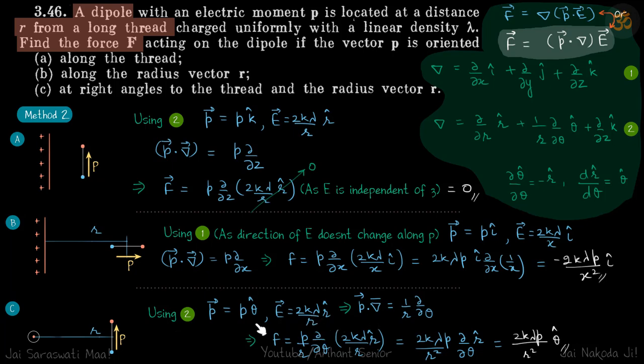So now we'll do p dot del. If you see only theta cap component will survive because again all these unit vectors are perpendicular to each other. So p theta cap dot of del will only give this component. So we will have in our first step force equal to p by r d by d theta. So p dot del is one by r d by d theta. So force is p by r d by d theta on E vector. So we are operating on E vector. So we put the E vector inside.